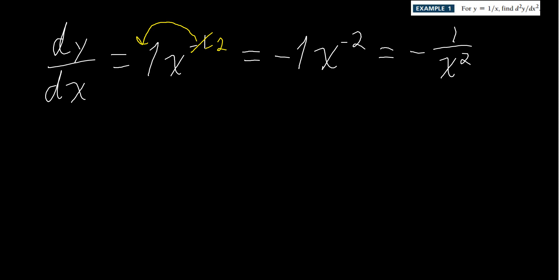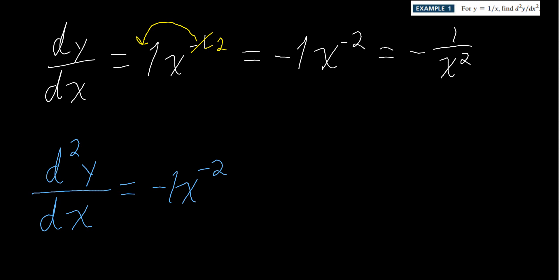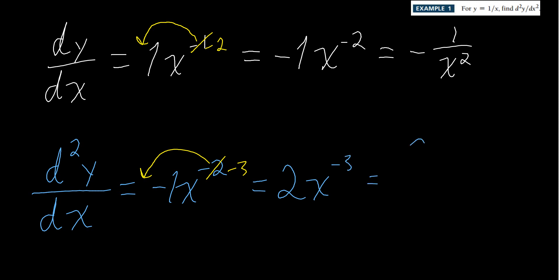Now for the second derivative, we move the variable to the top again. Bring down the −2, exponent goes from −2 to −3: −2 times −1 gives positive 2x⁻³. So the second derivative is 2/x³. That's it — we just take the derivative of a derivative.